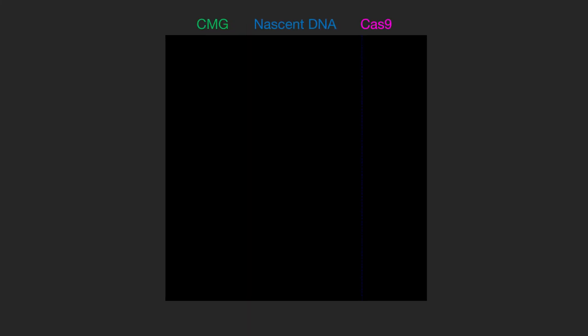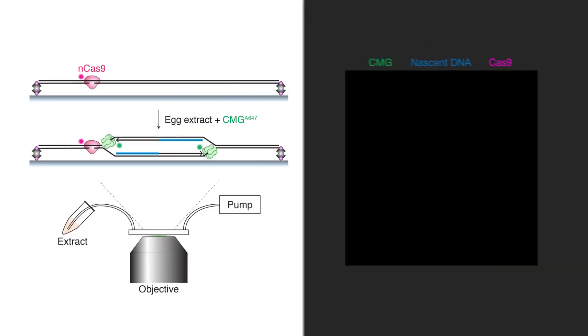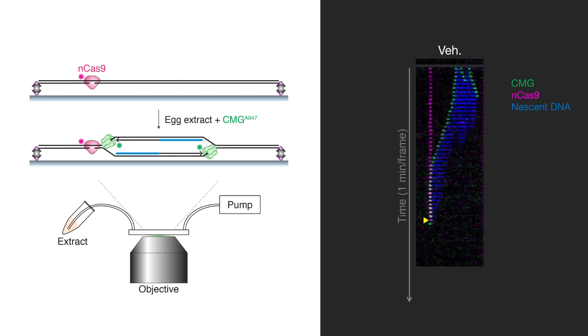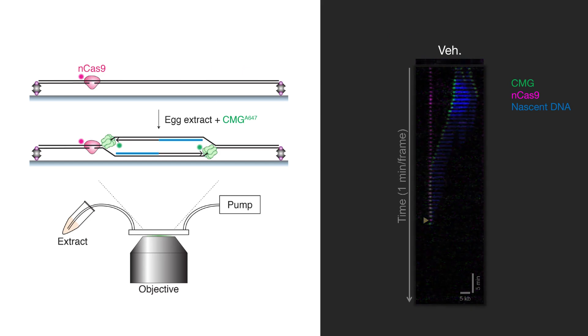When he did this, he saw many fields of view where there are many collisions between CMG helicases and these Cas9 nicking enzymes. When he looks at particular instances of these collision events, he sees that CMG travels towards the Cas9-induced nick, pauses for a while, and then soon after the Cas9 dissociates, CMG also immediately dissociates from the DNA.